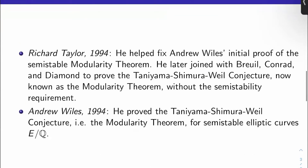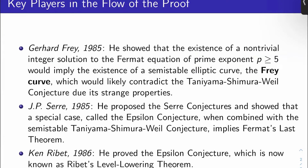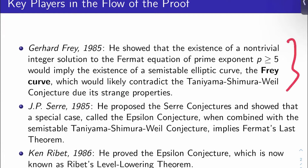First we have Gerhard Frey in 1985. He shows that the existence of a non-trivial integer solution to the Fermat equation of prime exponent p at least 5 — which, as you recall from the last couple of videos, is all that's left to prove — the existence of such a solution would imply the existence of a very strange semi-stable elliptic curve, the Frey curve we call it, which would likely contradict the Taniyama-Shimura-Weil conjecture due to its strange properties. All of this will be explained in upcoming videos.